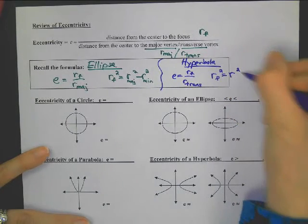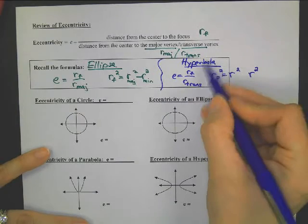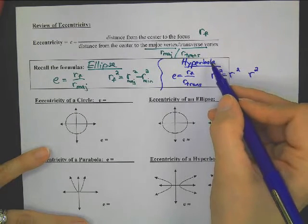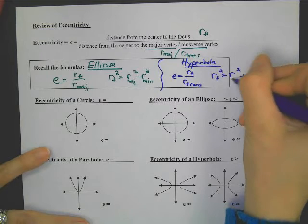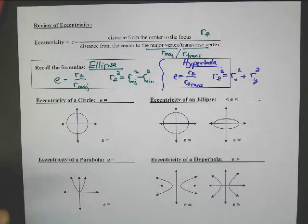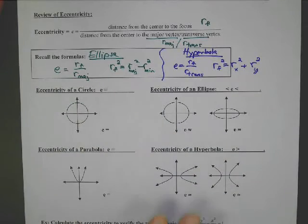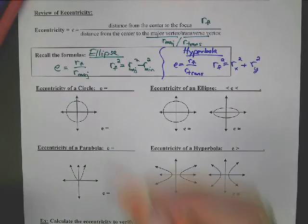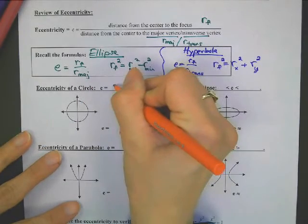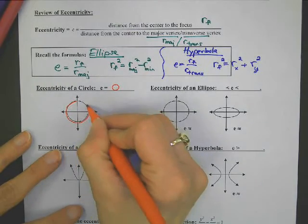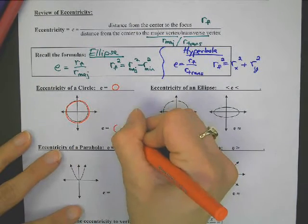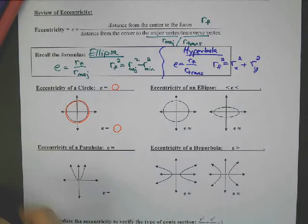R sub f squared for the hyperbola also has two radii. The hyperbola has a minus in its equation, so this formula gets the plus. It doesn't matter which goes where — you don't care about major or minor, it's just a plus. Eccentricity of a circle: remember this? The eccentricity of a perfect circle is zero.